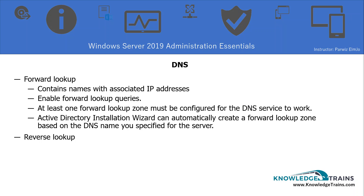The Active Directory Installation Wizard can also automatically install DNS. The reverse lookup zone contains IP addresses with associated DNS names. For example, if you have an IP address of 10.1.1.1, you can do a reverse lookup by typing ping 10.1.1.1 with the minus-a flag, and it will actually give you the name of that host.